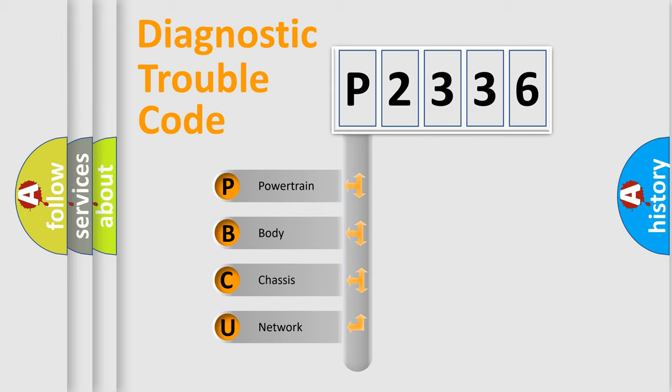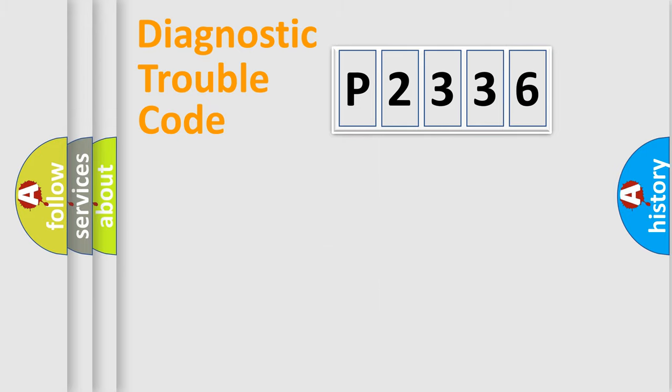We divide the electric system of automobile into four basic units: powertrain, body, chassis, and network. This distribution is defined in the first character code.